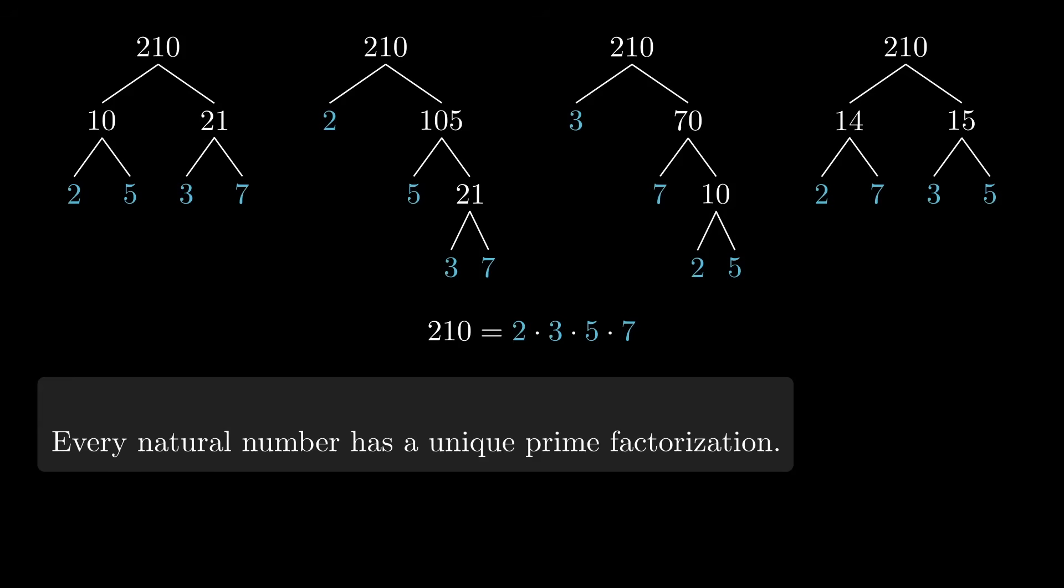The statement that every natural number has a unique prime factorization is called the fundamental theorem of arithmetic. And the ancient Greeks had a proof that it's true. But the proof is quite unusual, because it relies on an algorithm.